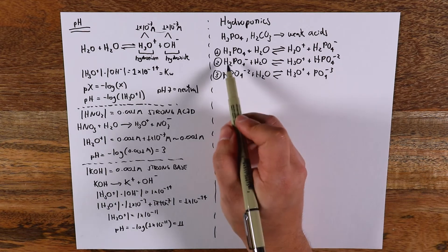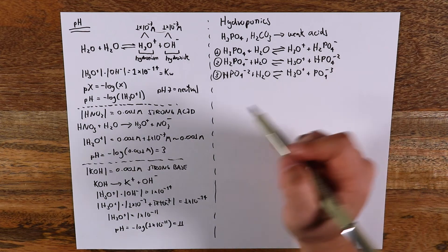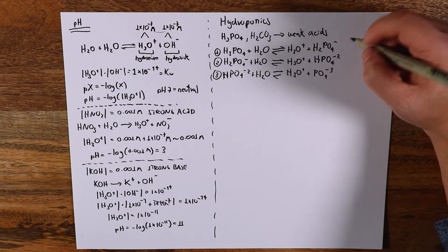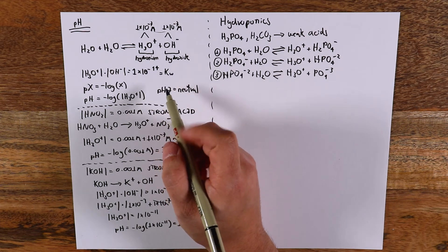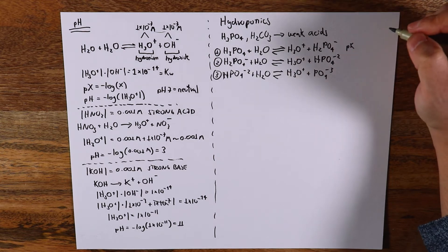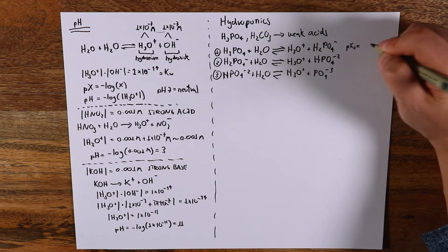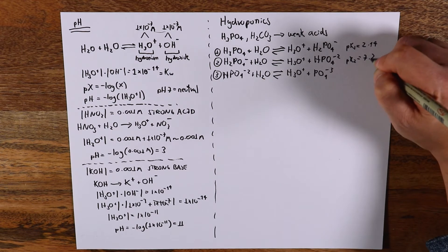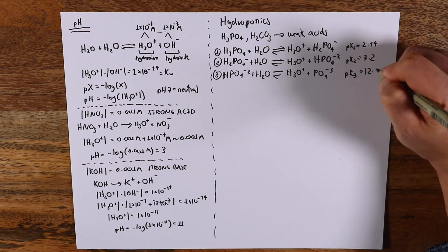In hydroponics we generally add something like monopotassium phosphate, but whenever we do this, all of these species are formed. These reactions — analogous to water — also have equilibrium constants. I'll write the pK values, which are minus the logarithm of those constants. The first reaction: pK1 = 2.14. The second: pK2 = 7.2. And the third: pK3 = 12.37.